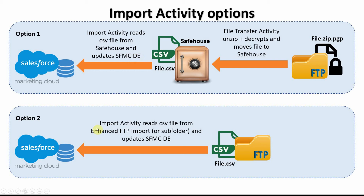The second option is where it was not encrypted at all — just a regular CSV file that we can directly read from in the FTP folder or an external location. In that case, we can use the import activity to directly go and read from that particular file and import the data in.